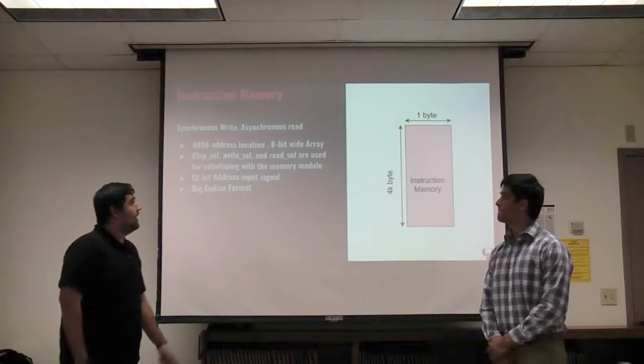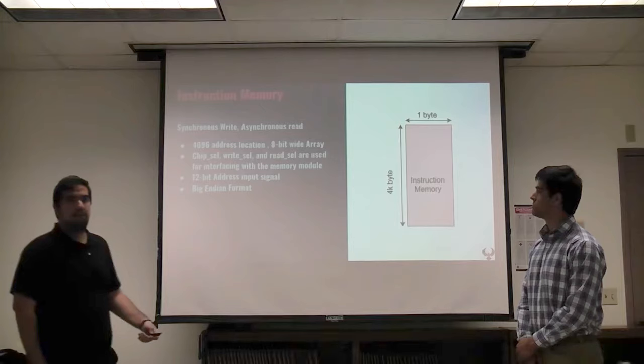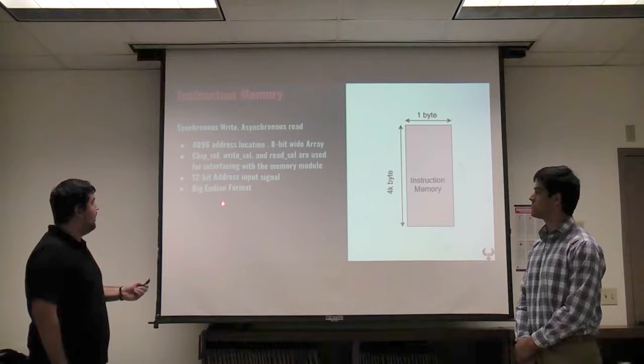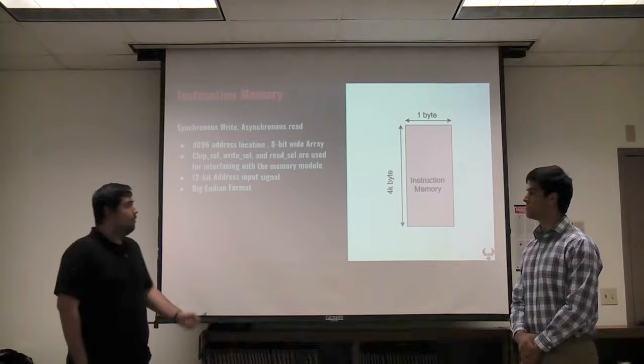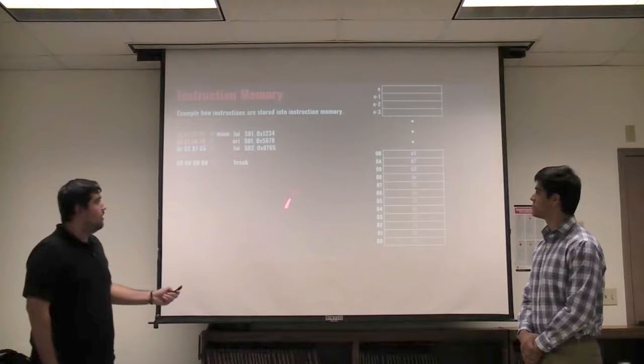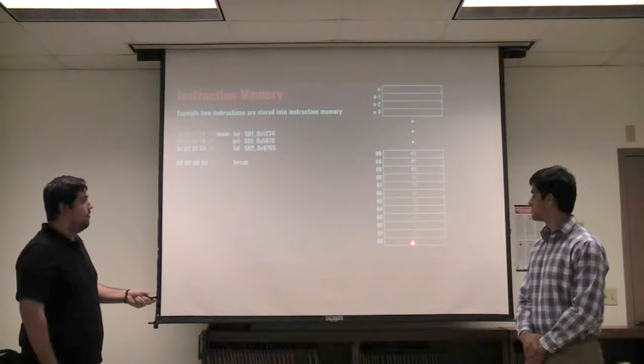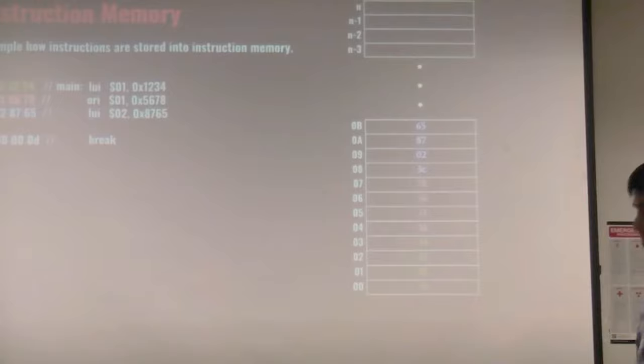Next we'll be talking about the instruction memory. It is 4K by 8, or 1K by 32-bit as you'd like to say. We use Big Endian format. The address coming in is a 12-bit address signal, and we only read from it — we don't write to it. The most significant byte goes up to the least significant byte — that's how the data is transferred.